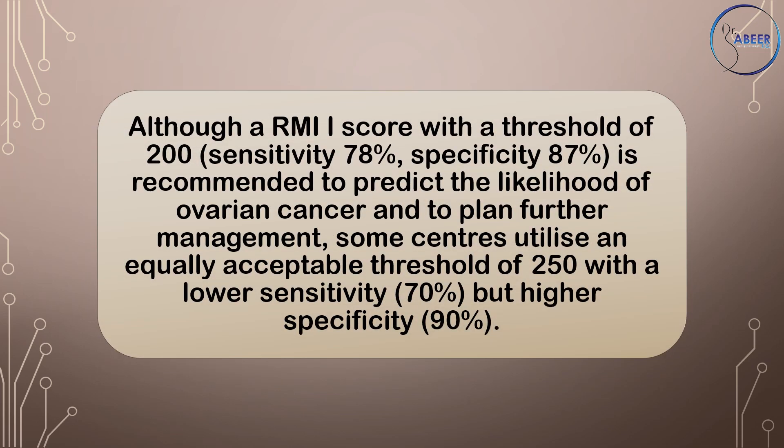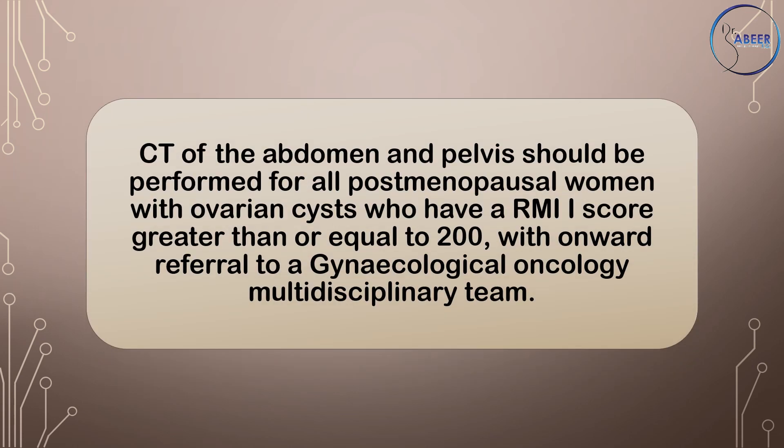Although a RMI-1 score with a threshold of 200 — sensitivity 78%, specificity 87% — is recommended to predict the likelihood of ovarian cancer and to plan further management, some centers utilize an equally acceptable threshold of 250 with a lower sensitivity of 70% but higher specificity of 90%. CT of the abdomen and pelvis should be performed for all postmenopausal women with ovarian cysts who have a RMI-1 score greater than or equal to 200, with onward referral to a gynecological oncology multidisciplinary team.